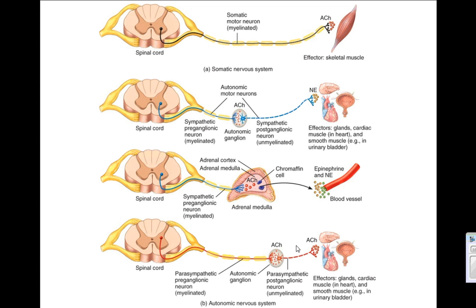There's a good chance you might see one or two of these figures on the test, where I might ask you which is being shown: somatic, parasympathetic, or sympathetic. If it's somatic, we know because there's only one neuron.